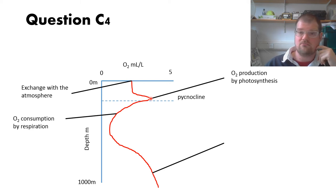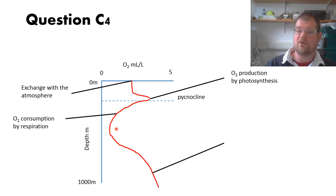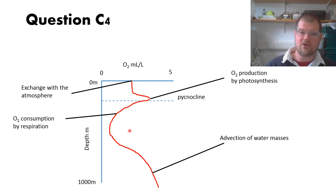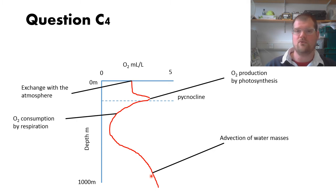Oxygen consumption by respiration is driven by the export of organic matter from the surface layer down into intermediate depths, where it can be respired — mostly by bacteria. In the deep ocean, oxygen concentration is determined by the advection of water masses from elsewhere. A key point: if the concentration is going up, you must be advecting from a region with high oxygen concentration, suggesting it's from a colder region where oxygen solubility at the surface was higher.